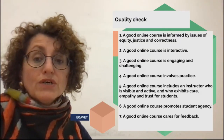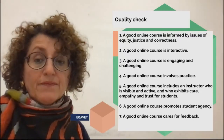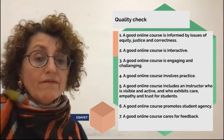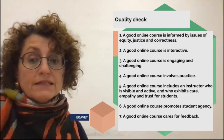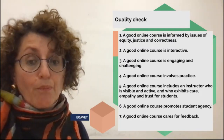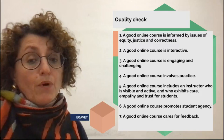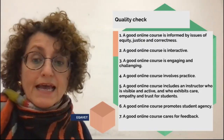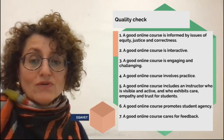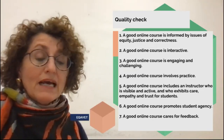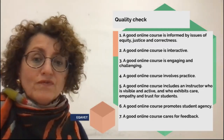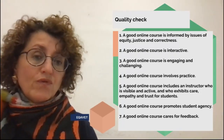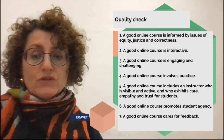A good online course promotes student agency — it gives students autonomy to enable opportunities for relevant and meaningful learning, and such a course redistributes power to the extent that is possible within the group. In the end, a good online course cares for feedback, and good feedback is very important to improve the further development of the course.